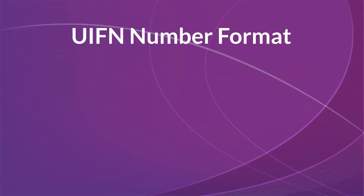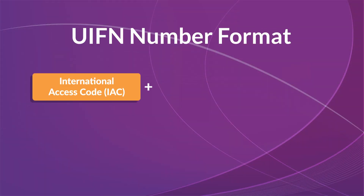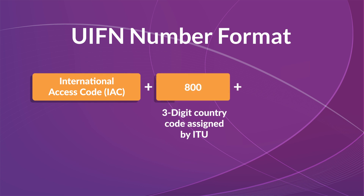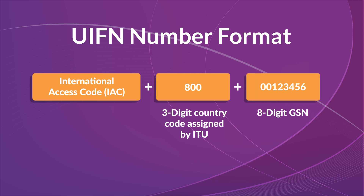If you are using only one number for multiple countries, what does the UIFN number format look like, and how would your global customers dial this number? There are variations in dialing prefixes based on the caller's country, but typically the number starts with a three-digit code like A00, assigned by the International Telecommunication Union. That's followed by an eight-digit global subscriber number unique to your business. On top of this, customers may first need to enter a dial-out prefix or international access code, depending on their country.